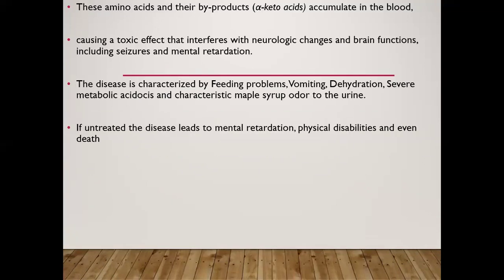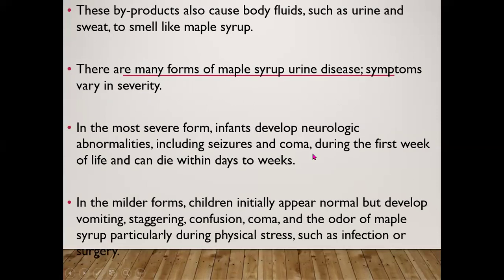The neurologic effects include seizures and mental retardation. The disease is characterized by feeding problems, vomiting, dehydration, severe metabolic acidosis, and a characteristic maple syrup odor to the urine. If untreated, the disease leads to mental retardation, physical disabilities, and even death. The byproducts cause body fluids — urine and sweat — to smell like maple syrup.